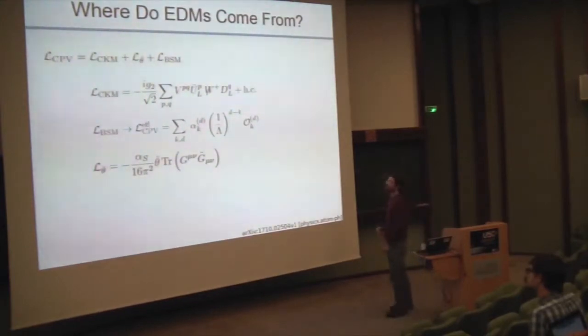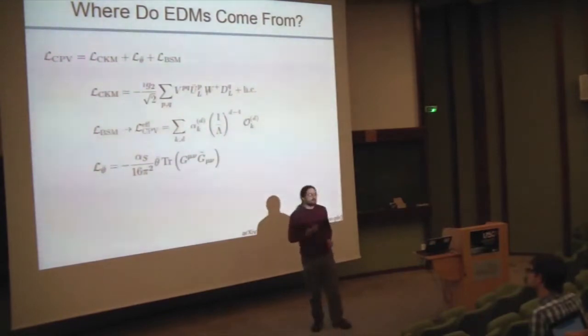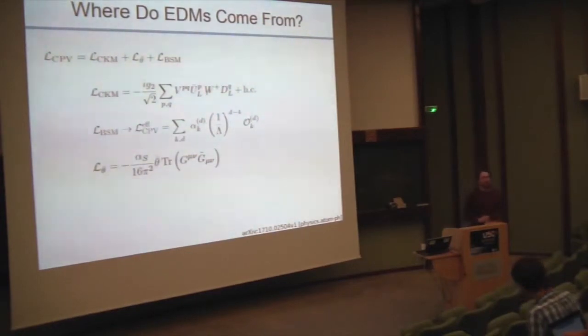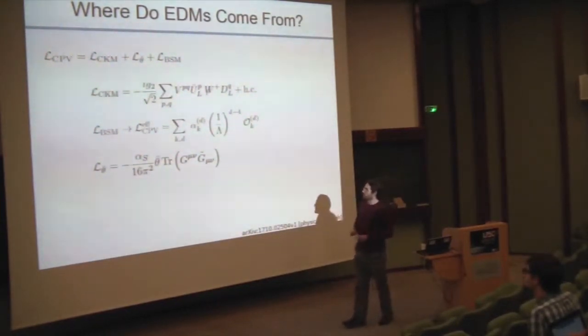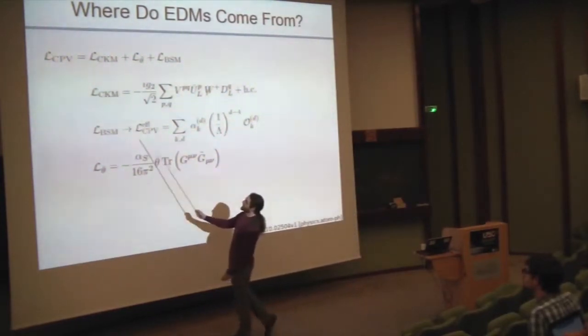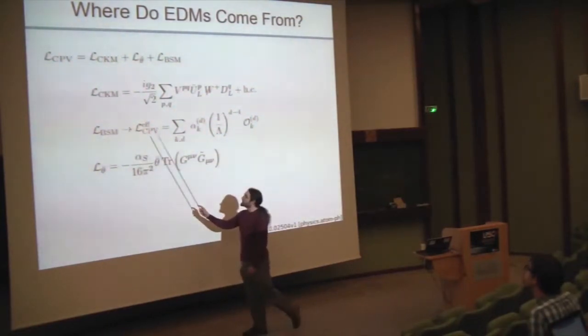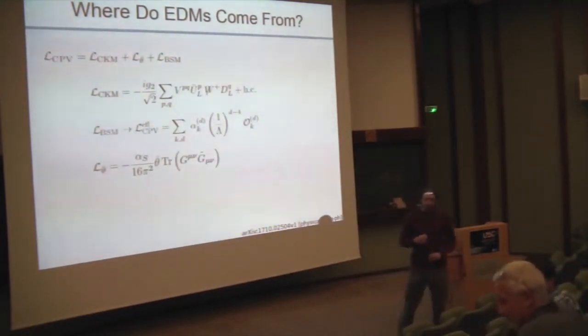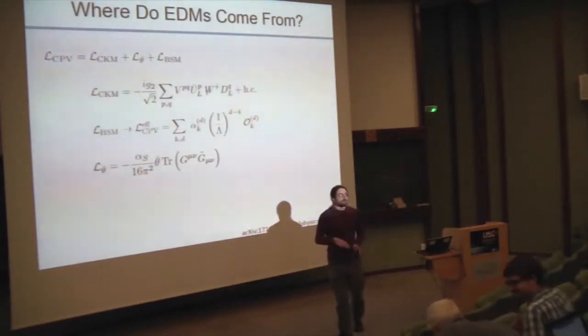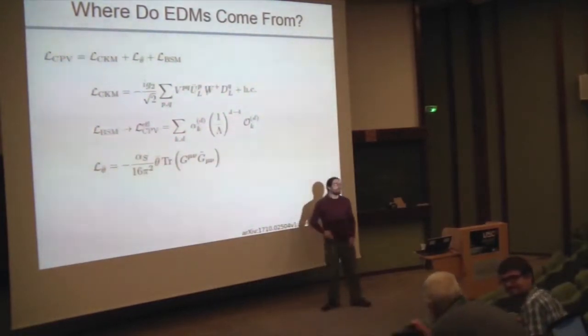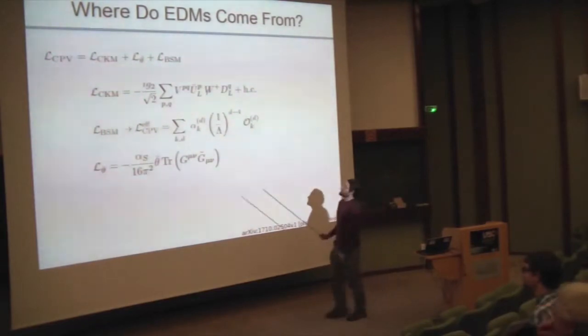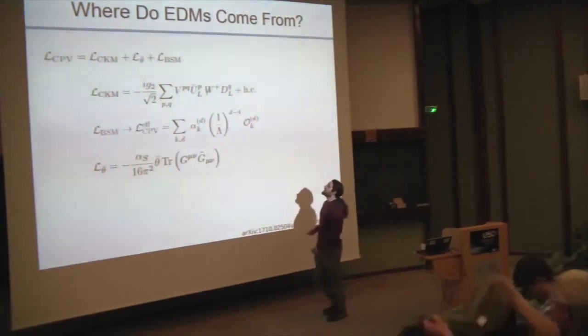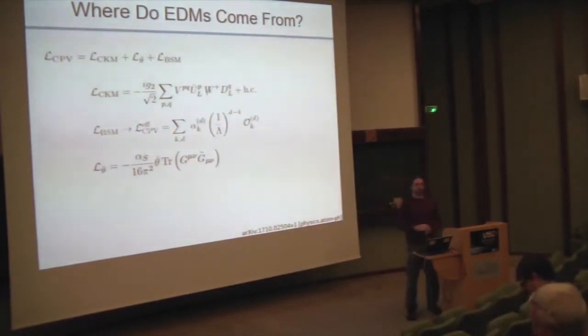Where do we begin? We have some fundamental Lagrangian that violates CP. This has qualitatively three components: the theta term, the CKM mixing phase, and whatever comes from beyond the standard model. The beyond standard model term is really the interesting one and motivates a lot of experimentalists looking for EDMs. If you bring this into an effective field theory at the weak scale, you're writing it in terms of standard model fields with effective operators that enter at a dimension of six or more.